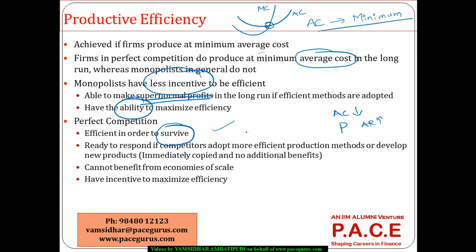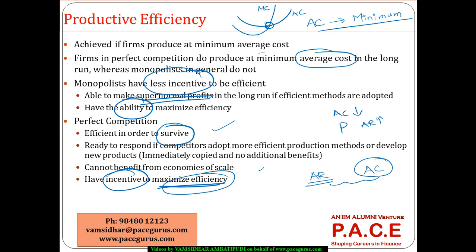Whatever a firm has done in terms of improving efficiency in a perfectly competitive market, even the competitors are going to imitate that immediately. Whatever additional cost is incurred in achieving that additional efficiency gets wiped away by the competition. Without maximizing efficiency, they cannot generate any profit. Profit generation must come only through efficiency maximization in a perfectly competitive environment, because they can't change the price — they can only cut down on average costs. However, they cannot benefit from economies of scale.